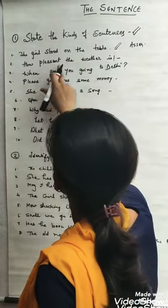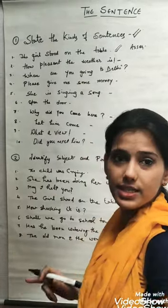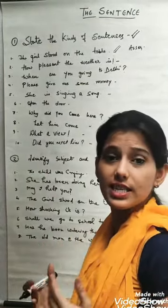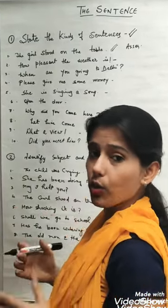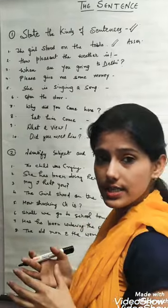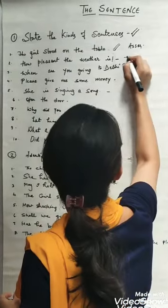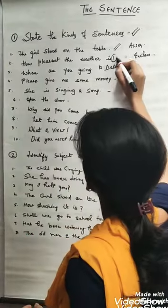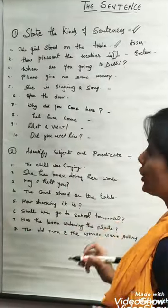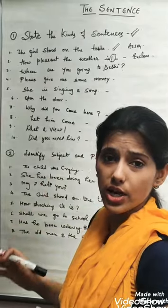See the next one. How pleasant the weather is. This is a sudden emotion, a sudden feeling that how beautiful the weather is. And according to the definition, what kind of sentence it is? Yes, it is exclamatory sentence. And also it is ending with an exclamatory mark. You can pause the video and you can try to do it yourself.